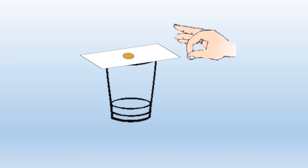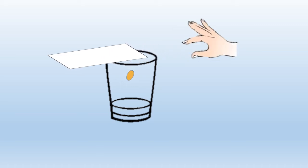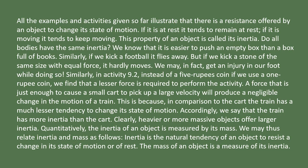We all agree that pushing an empty box is better than pushing a box full of books. Similarly, kicking a football causes it to fly backwards. However, if we kick a stone of the same size with the same amount of energy, it hardly moves. It's possible that we'll injure a foot in the process. So we can state that inertia is the natural tendency of an object to resist a change in its state of motion or of rest. The mass of an object is a measure of its inertia.